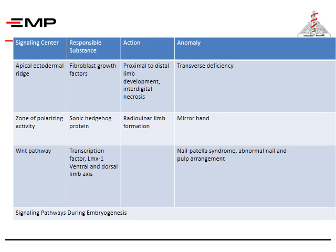The zone of polarizing activity has the sonic hedgehog protein as its responsible substance. Its action is radio-ulnar limb formation, and its anomaly is the mirror hand. The WNT pathway involves a transcription factor controlling the ventral and dorsal limb axis, and its anomaly is nail patella syndrome with abnormal nail and bulb arrangement.